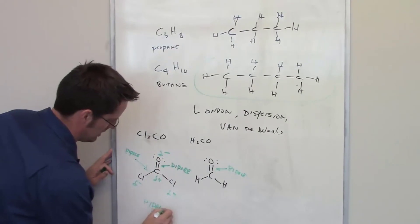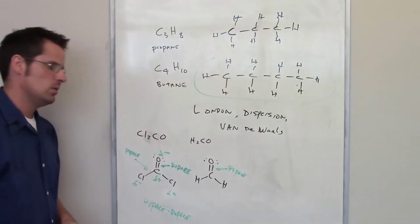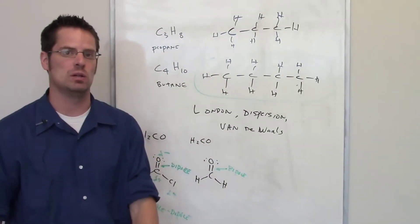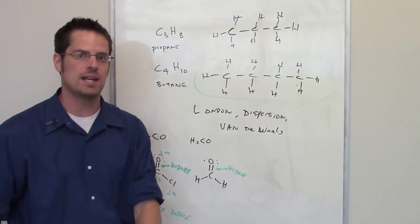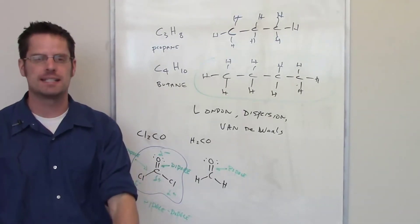Which of these two molecules will have a higher boiling point? Well, let me ask you: which of these two molecules has a higher amount of dipole-dipole, and which of these two molecules has a higher molecular weight? Yeah, it's phosgene. So phosgene is going to have a higher boiling point than formaldehyde.